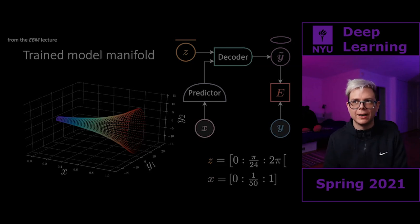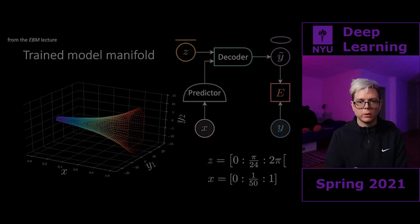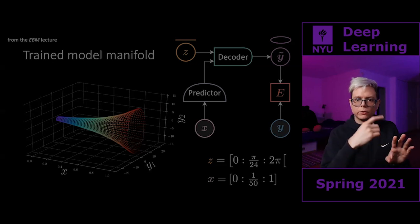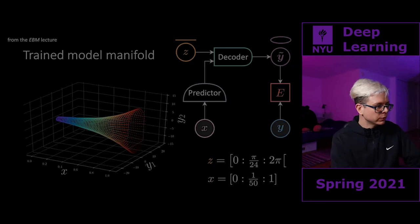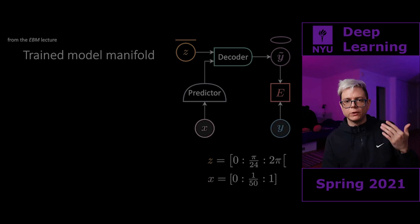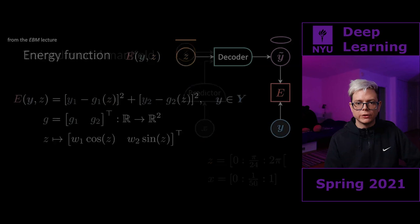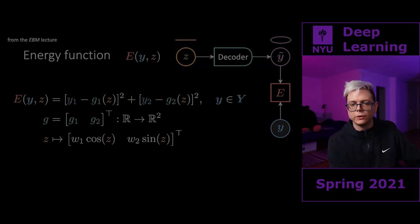We've already seen this stuff. This one we saw two weeks ago — the conditional predictive latent variable model. Because we go from an X to a Y: from X, we go through the predictor to get the hidden representation. Then we need the latent variable Z in order to capture multiple possible values of Y that can be associated to the given X.